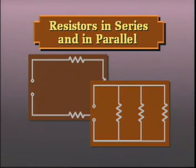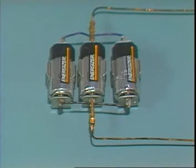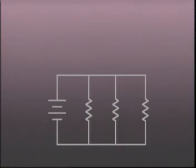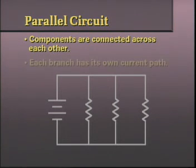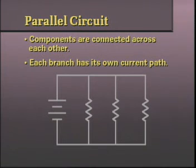In addition to the series connection of components, electronic circuits often involve components connected in parallel. In an earlier lesson, we saw how cells or batteries could be connected in parallel to increase the current capacity of a circuit. Resistors can also be connected in parallel. In a parallel resistive circuit, the resistors are connected across each other. Each individual parallel component or branch, as parallel circuits are called, has its own current path.